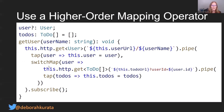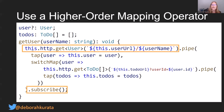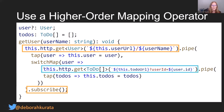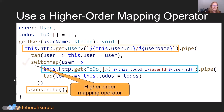So here we're using a SwitchMap. We have our first HTTP GET where we're getting the user and subscribing. Then inside, we're issuing this HTTP GET to get all of the to-dos. By using SwitchMap, which is a higher-order mapping operator, it will automatically subscribe to its inner observable.